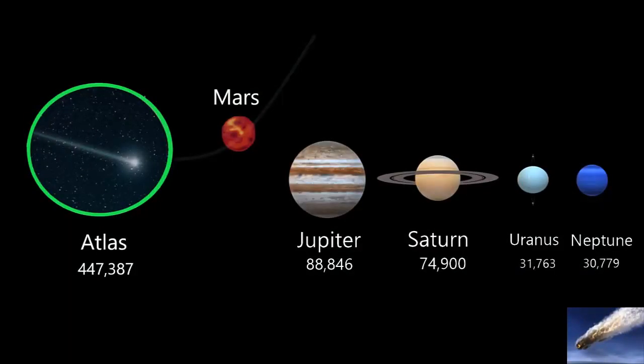The comet is presently passing through the orbit of Mars with a diameter that is twice the size of all the major planets in the solar system combined. It is already much brighter than astronomers expected it to be at this point in its journey. By the end of April, the comet should be putting on a stunning display for all the world to see.